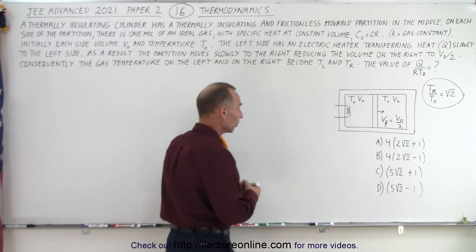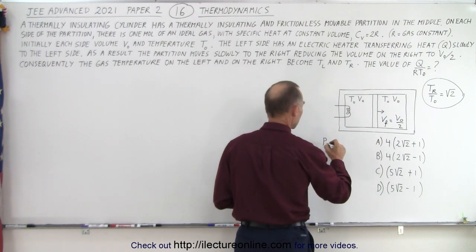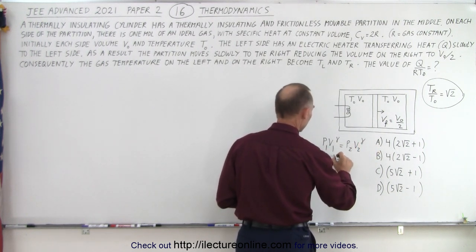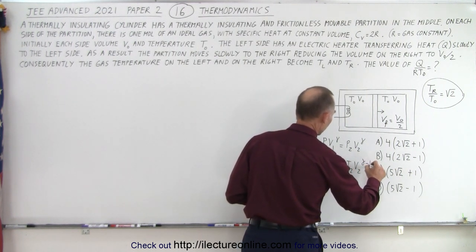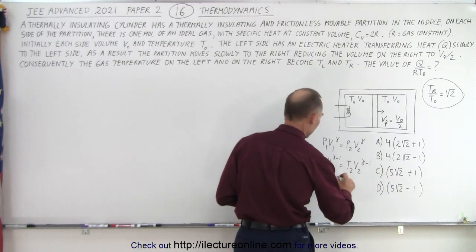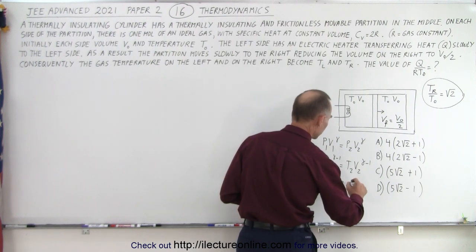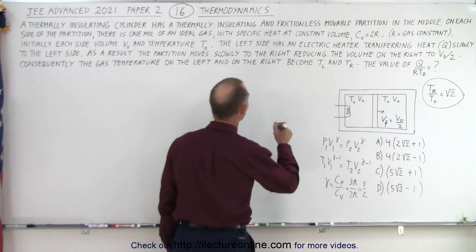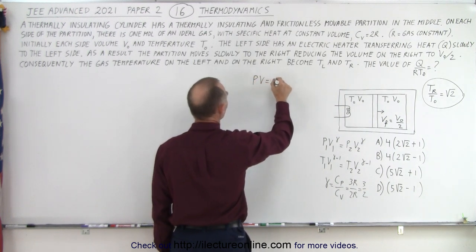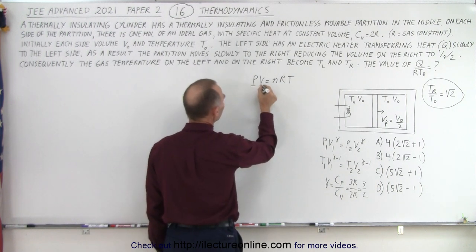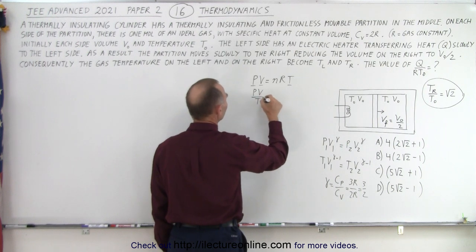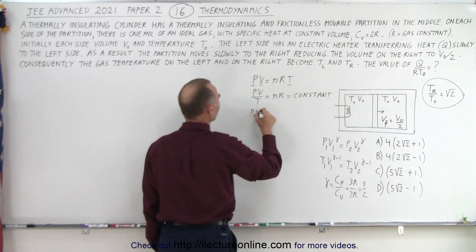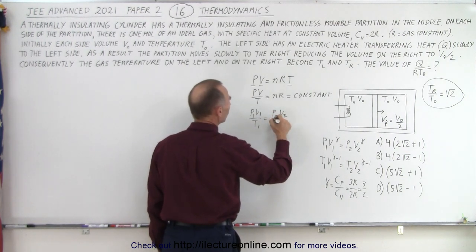You need to know the equations associated with the adiabatic side. We have P₁V₁^γ = P₂V₂^γ, and T₁V₁^(γ−1) = T₂V₂^(γ−1). Gamma is equal to the ratio of C sub P over C sub V, which is 3R over 2R, equal to 3/2. Another equation we'll need is the ideal gas equation PV = nRT. Since P, V, and T are all changing, we can say PV/T = nR = constant, so P₁V₁/T₁ = P₂V₂/T₂.